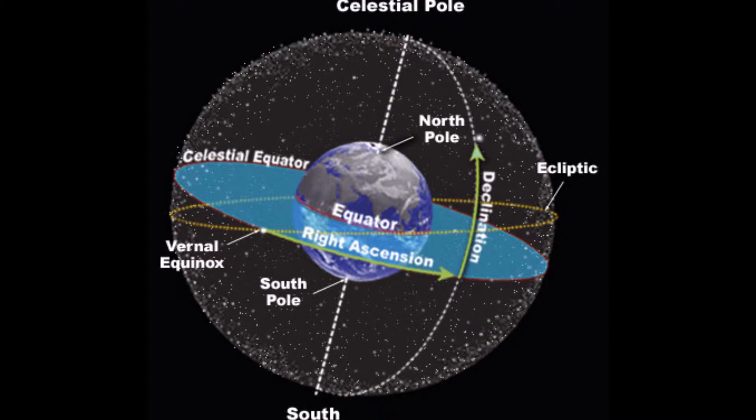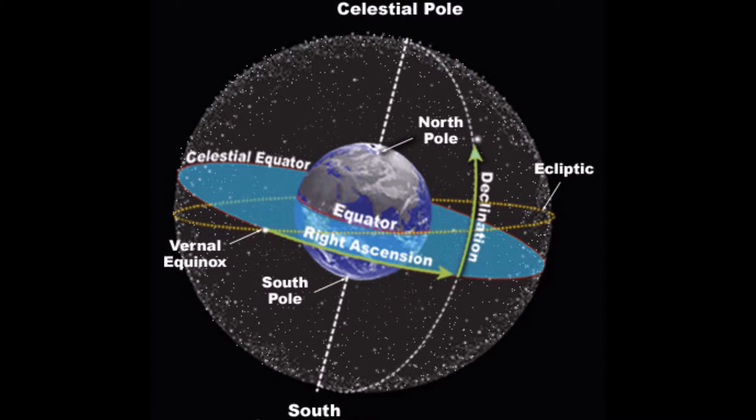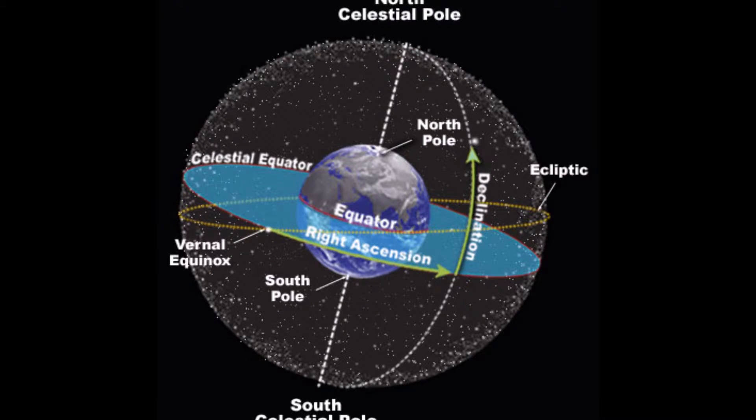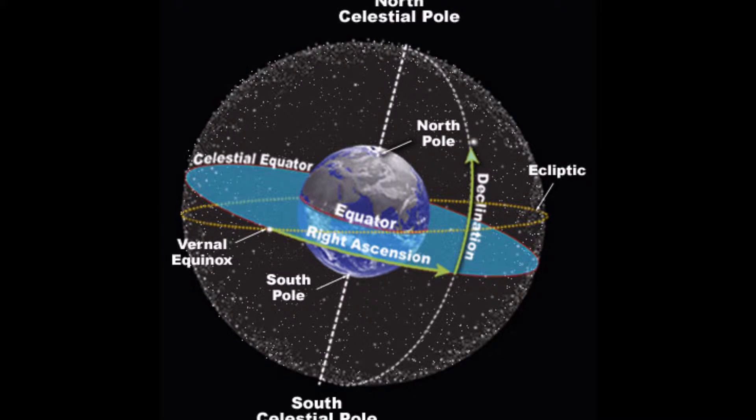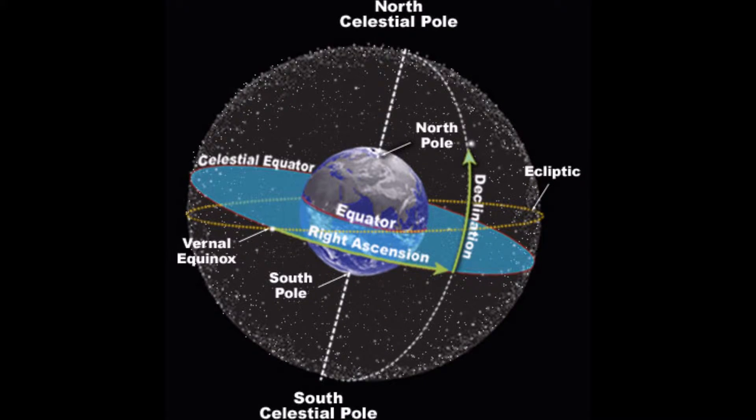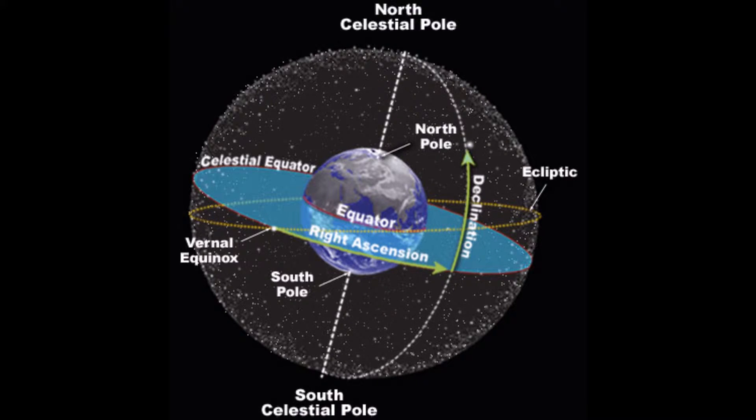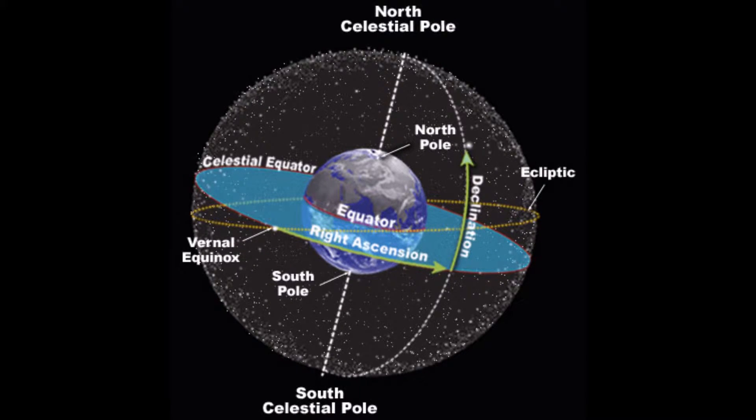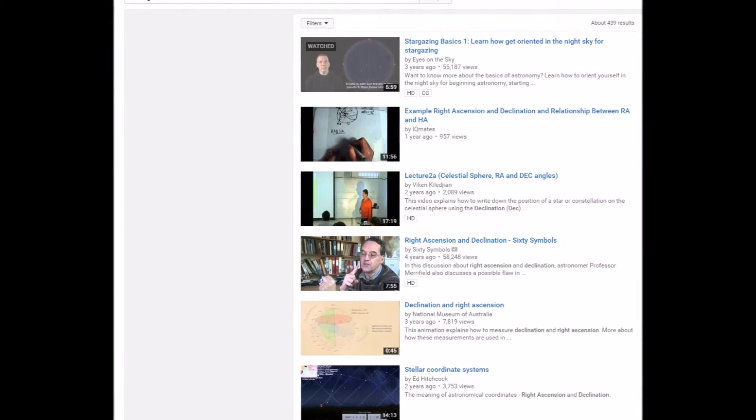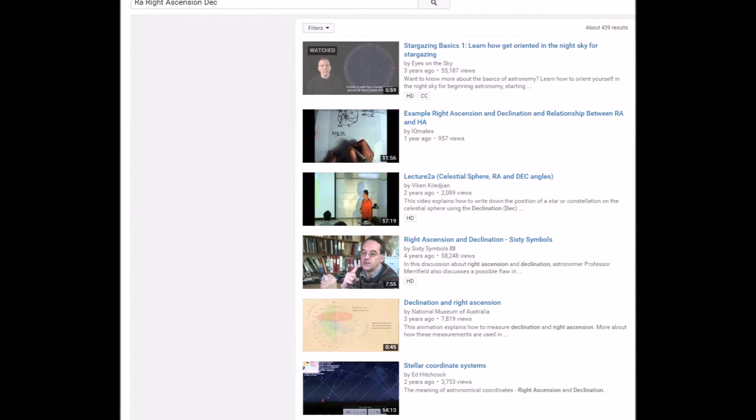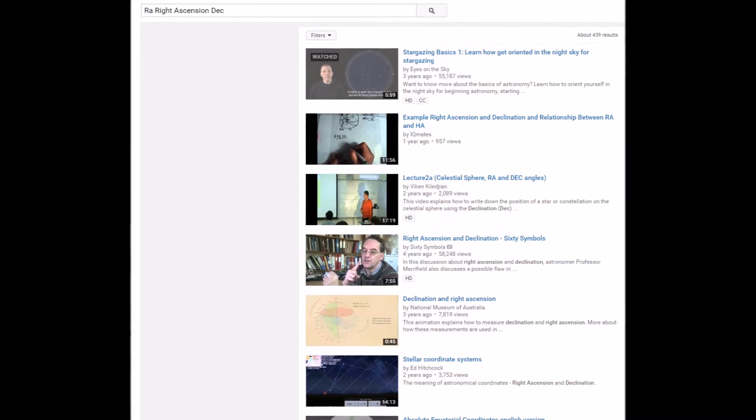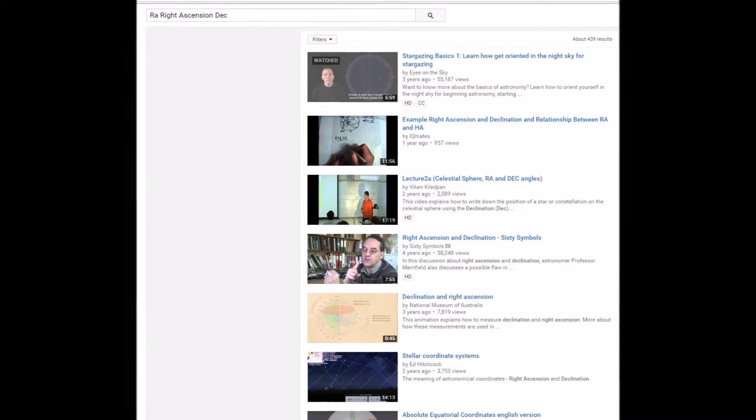Then incorporating it into the planetarium software typically may involve converting into some other form of image files which can be incorporated at that location, at that right ascension and declination. For those of you who may be just getting into this kind of work, there are a number of videos available on YouTube which will help understand these specific coordinate systems.